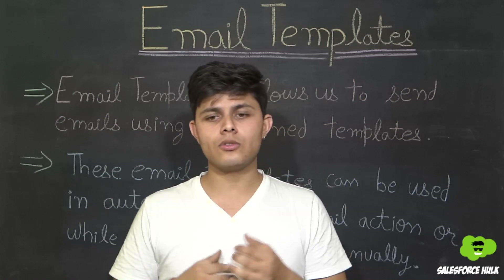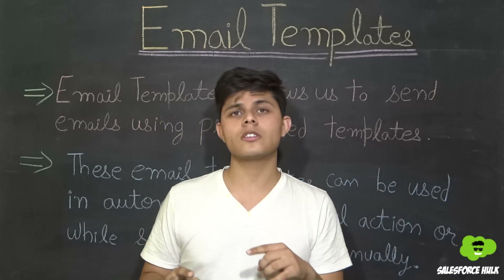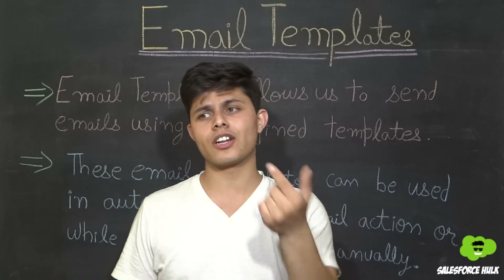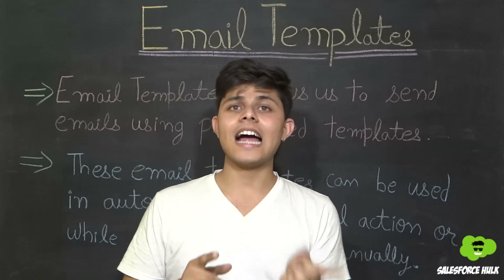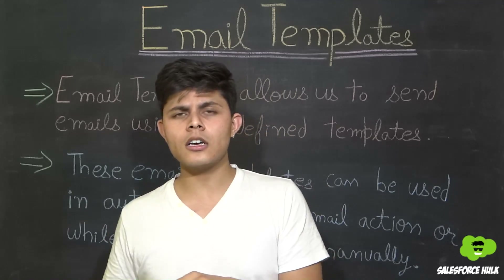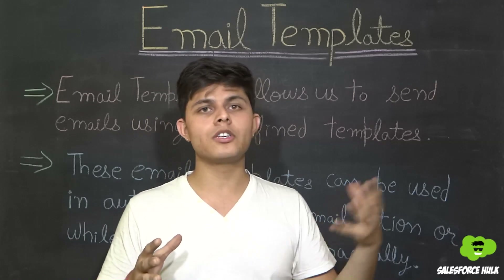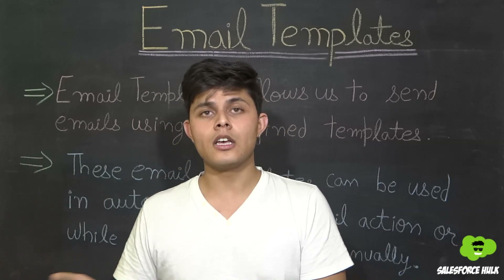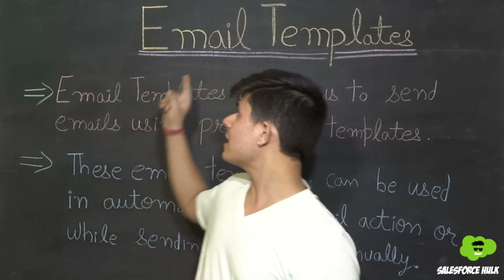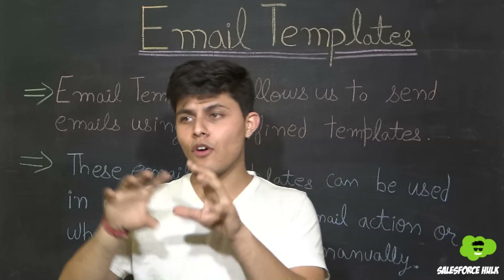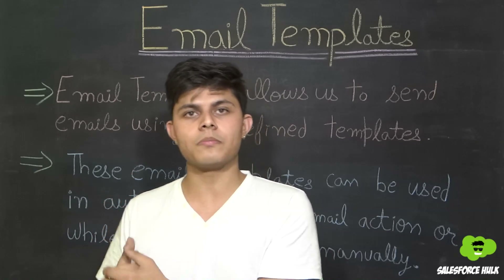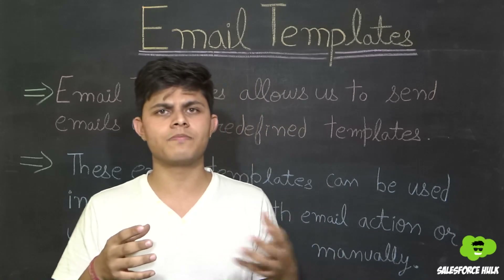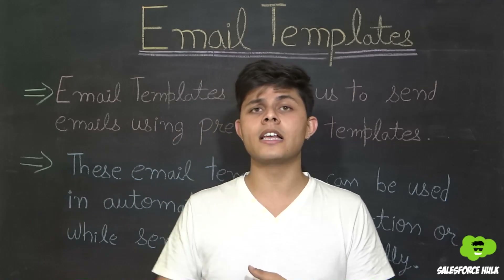There are times when you want to automate your business process, and in that automation you want an email sent automatically whenever a particular record gets created and meets certain criteria. In that situation you create an email alert, but since it's automation there's no human interaction. So the content included in that email will be controlled by the email template only — you set a particular format and using that template the email goes to that person.